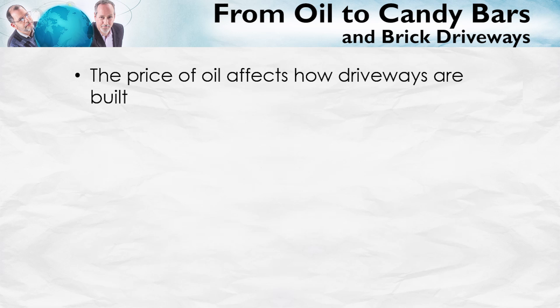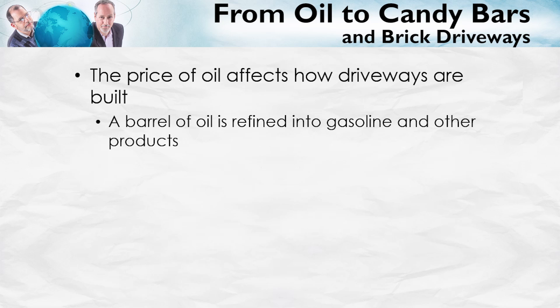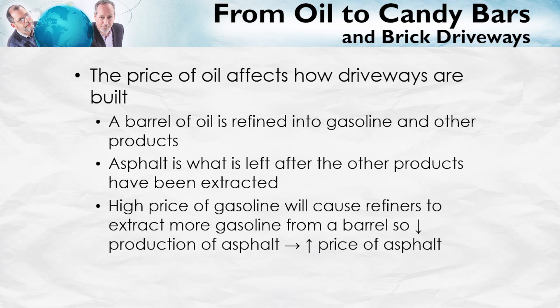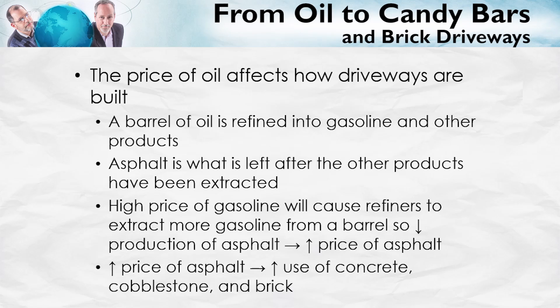Here's another example of how a change in price in one market ripples out throughout the world economy, changing prices, consumption and production decisions, incentives and choices throughout the entire world. We're going to show how the price of oil affects how driveways are built. A barrel of oil is refined into gasoline, but also into many other products such as jet fuel, lubricants, and also asphalt — asphalt, in fact, is what's left over after the other products have been extracted. Within limits, refiners can choose how much of each product to extract. A higher price of gasoline will cause refiners to work extra hard to extract more gasoline from a given barrel, which means less production of asphalt and therefore a higher price of asphalt. So when someone is thinking about how to pave their driveway, they're going to see the higher price of asphalt and instead use concrete, cobblestone, or brick.